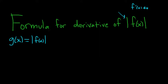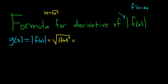The absolute value of x is equal to the square root of x squared. So what we can do here is write this as the square root of f of x squared — same thing, our x is f of x. Now we can write the square root as something to the one-half power, so it's f of x squared to the one-half.